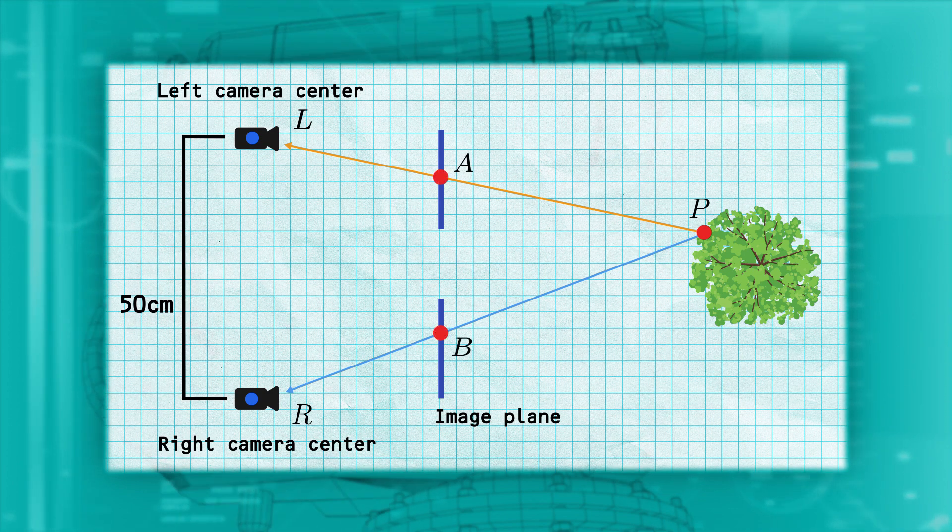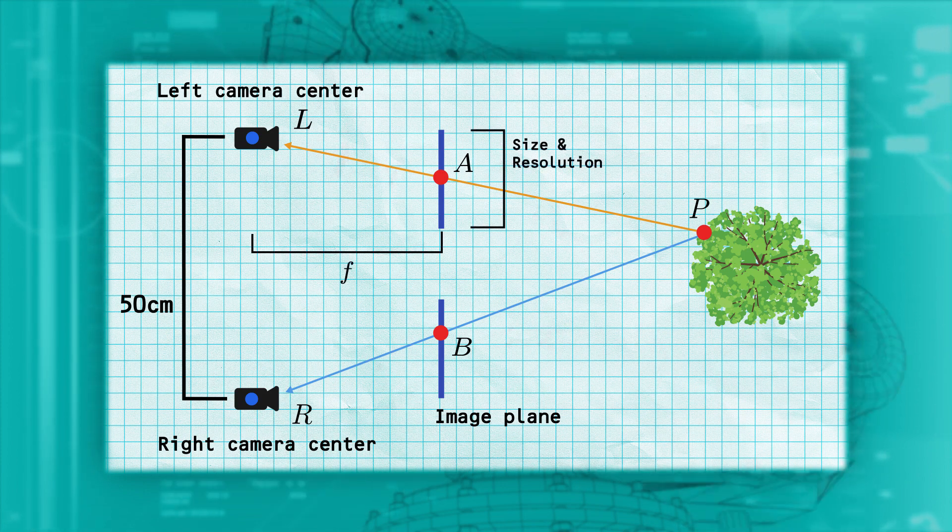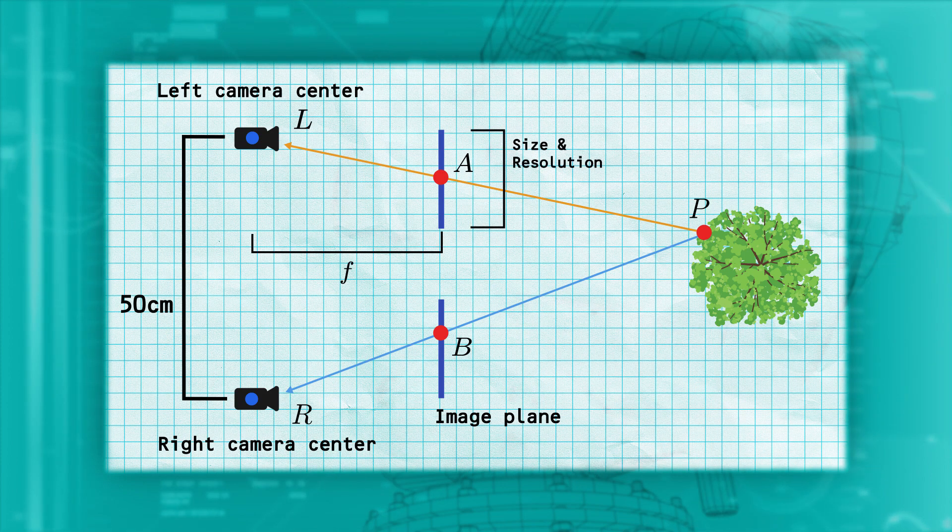We also know the camera characteristics: focal length, sensor size, and sensor resolution.